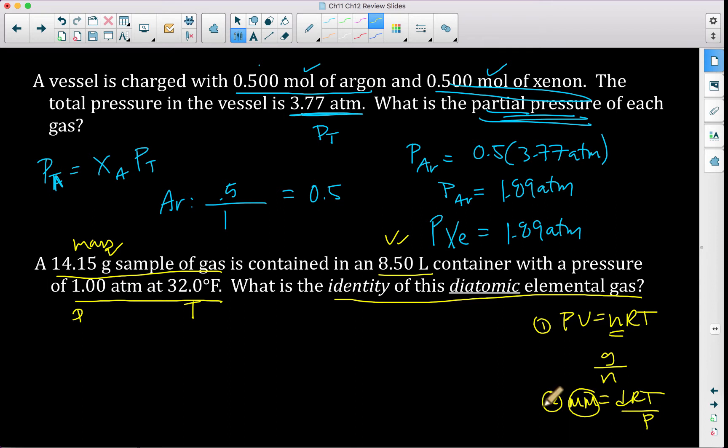This problem actually has a third way we can solve it if we pay attention to what information we are given. So if we look, we have one atmosphere, and we have 32 degrees Fahrenheit. What's 32 degrees Fahrenheit equal in Celsius? This happens to be zero degrees Celsius. So if I'm at zero degrees Celsius in one atmosphere, what do we have? We have standard temperature and pressure, which means 22.4 liters is equal to one mole. Molar volume applies at STP.